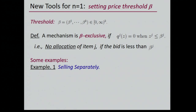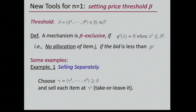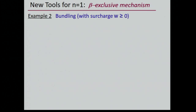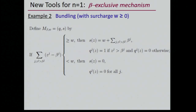Let's look at some examples of possible beta-exclusive mechanisms. The first is selling separately: pick a price vector gamma that is pointwise greater than beta, and sell each item at gamma_j. Another example is an extended version of bundling with a surcharge: the buyer picks up those items whose valuation exceeds beta_j, and they receive that bundle but pay beta_j plus an additional surcharge w. Both examples are truthful mechanisms and are beta-exclusive.